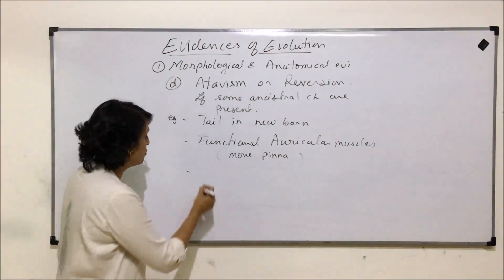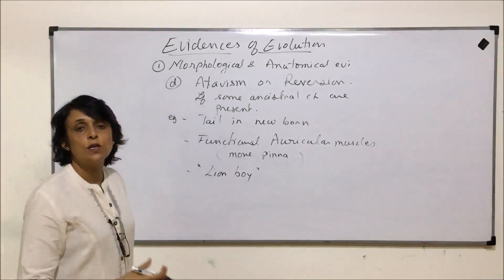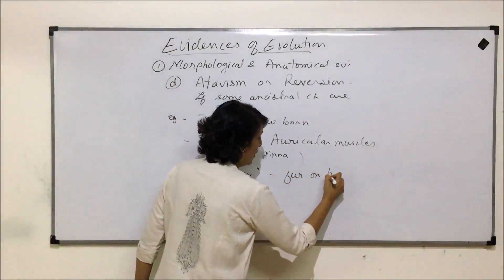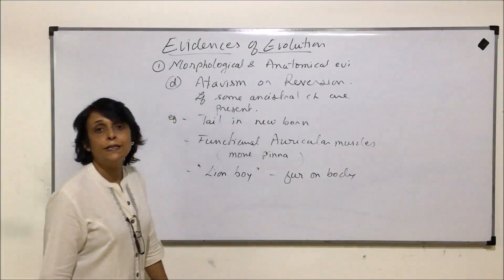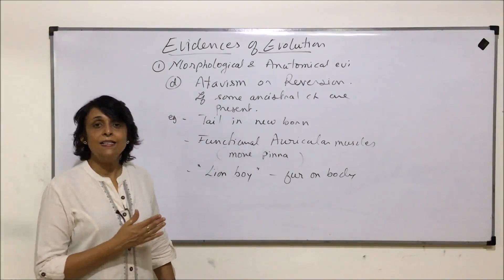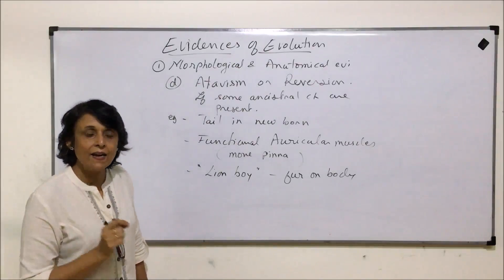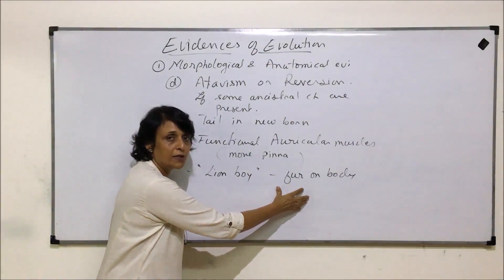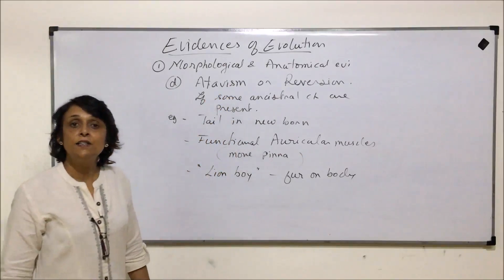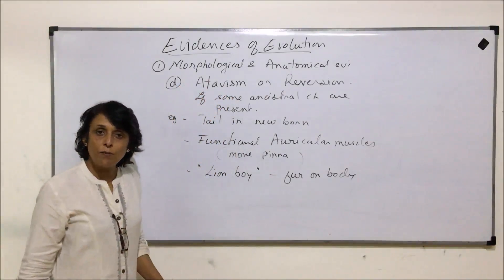One more example is the 'lion boy' condition, in which human babies are born with thick fur on the body. Our ancestors were monkeys, and monkeys have thick fur on the body. As evolution took place this fur was lost or replaced by very short fine hair. But if an individual or baby is born with thick fur, that is also considered reversion or atavism. This is also a morphological and anatomical evidence.